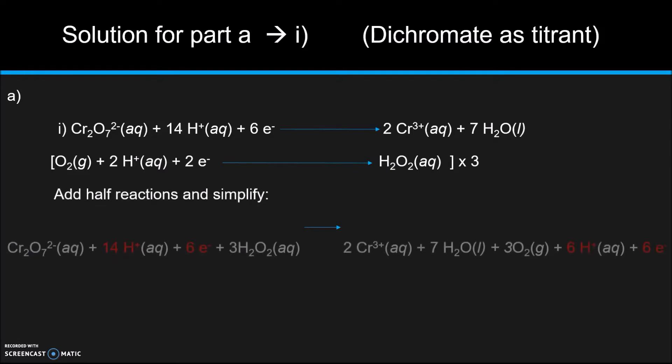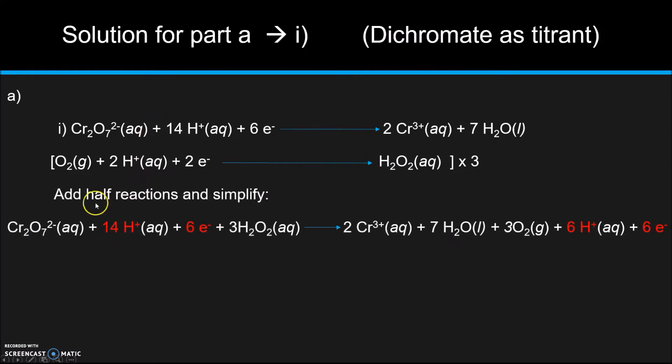So what is that going to do when we multiply everything out and flip the second half reaction? Well, we're going to add them and simplify. So we're going to get this lengthy equation. So basically what we can do from here is notice things that we can cancel on both sides, which I've highlighted in red. So we have 6 electrons on both sides, which we should have after multiplying and reversing it. So these are going to cancel and go away. We have 14H⁺ on this side and 6H⁺ on this side, which means you can get rid of this one and therefore only be left with 8 on this side. So that's how we get the overall reaction.